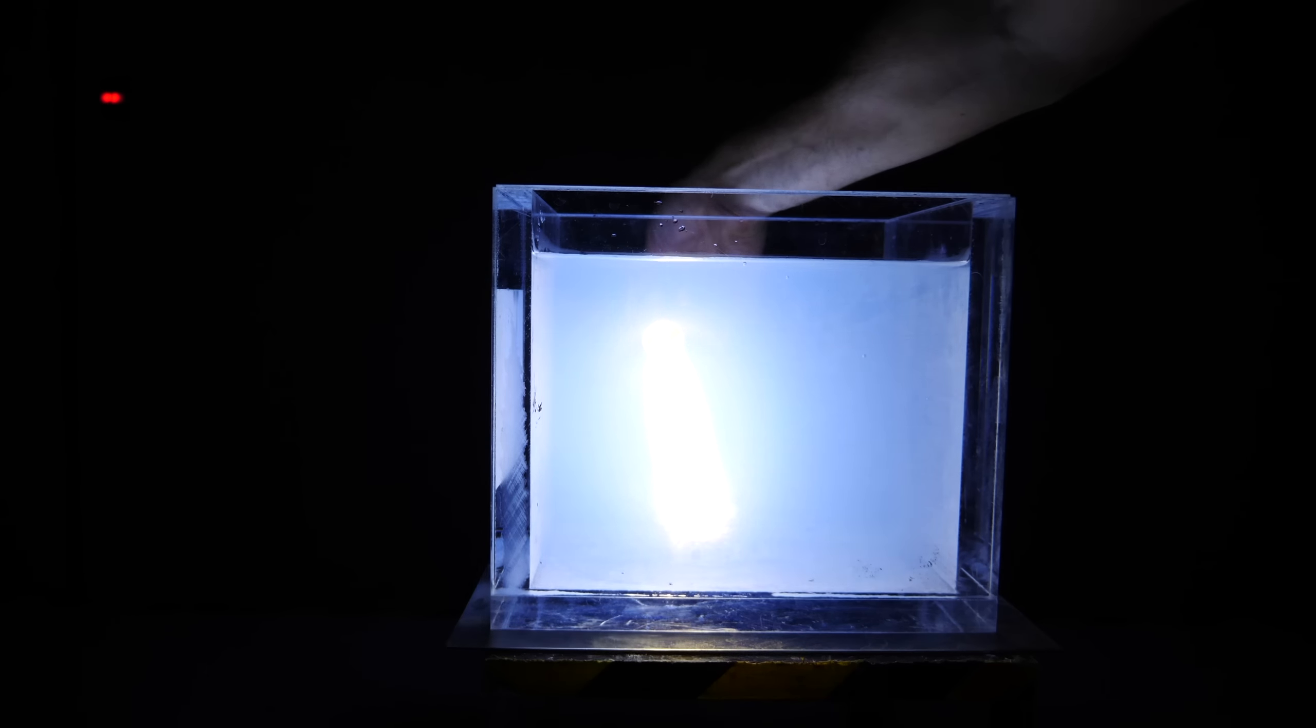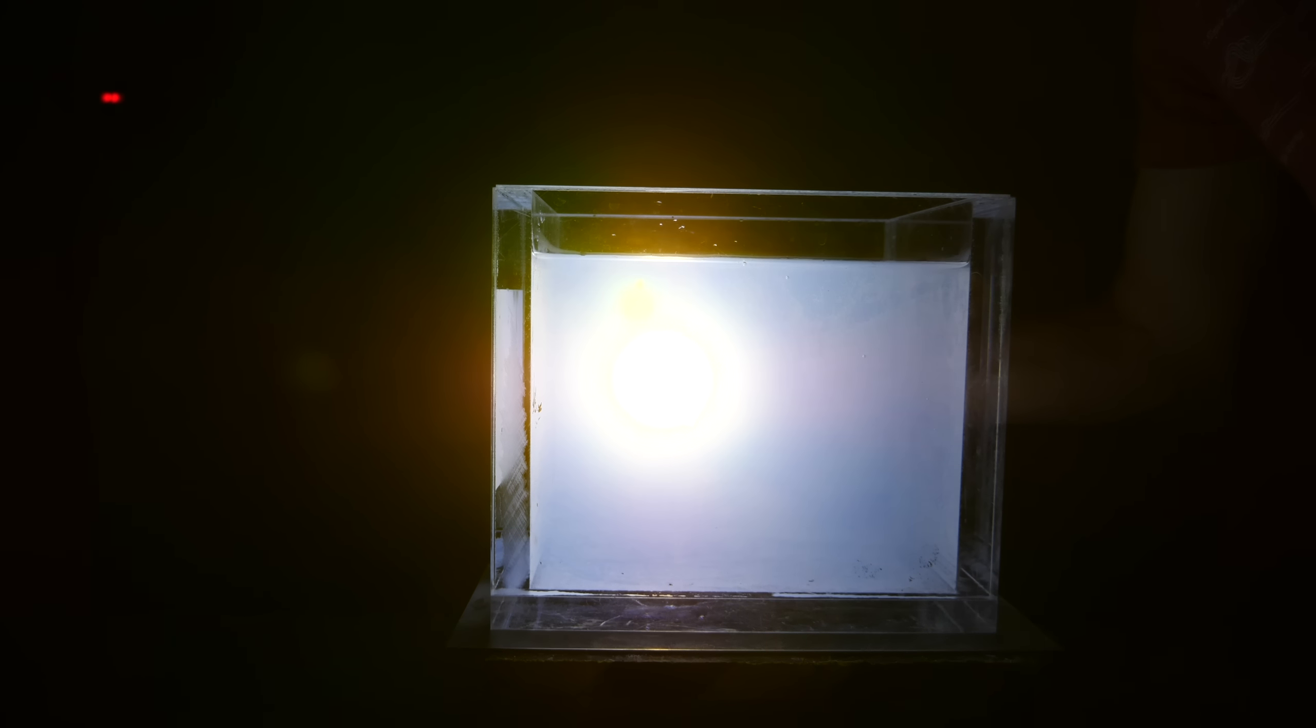The same thing happens if I shine the light at the camera. Notice how it's this bright white up here. So here's white, move it down and it becomes this yellowish-orange-red color.